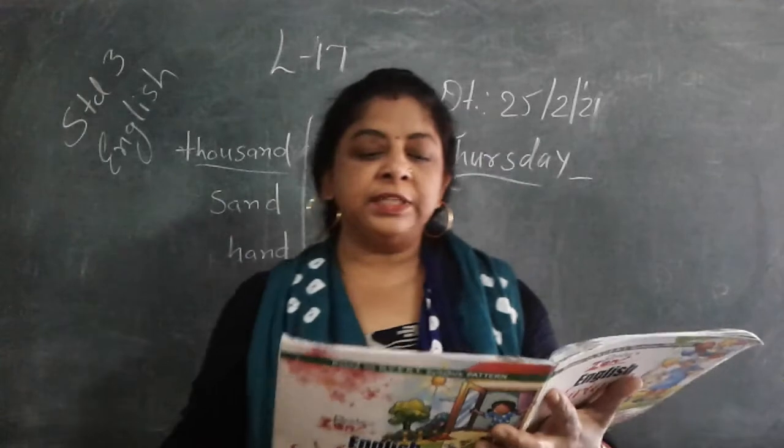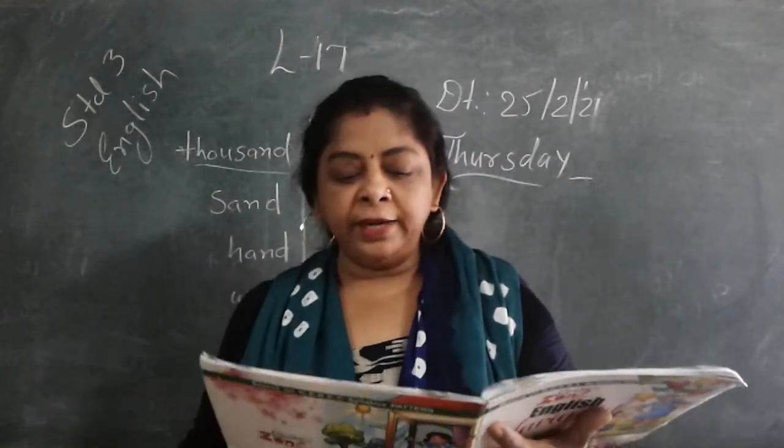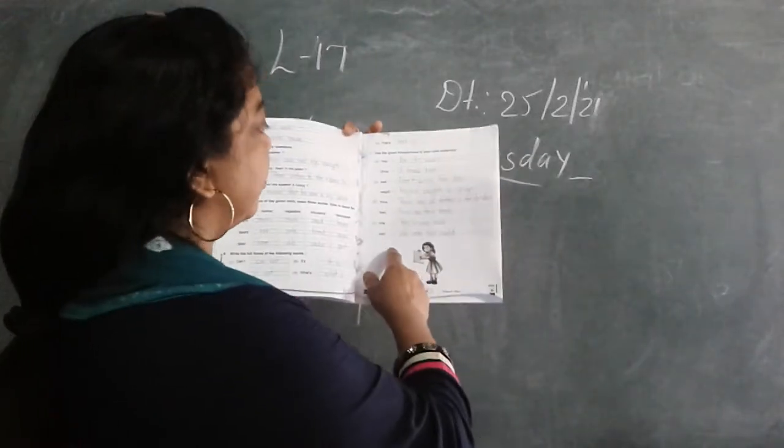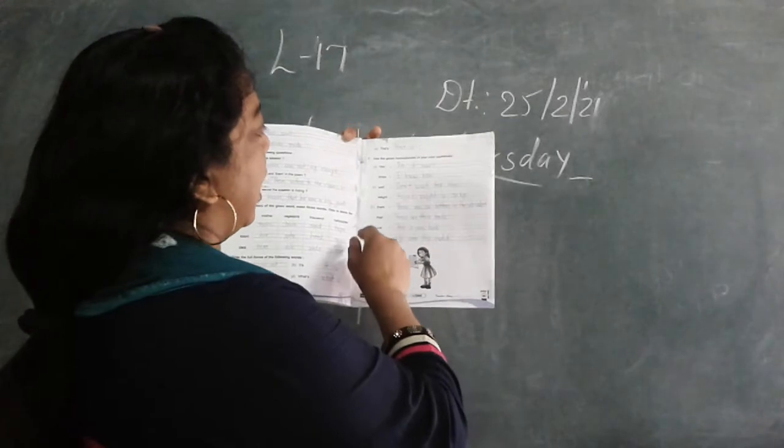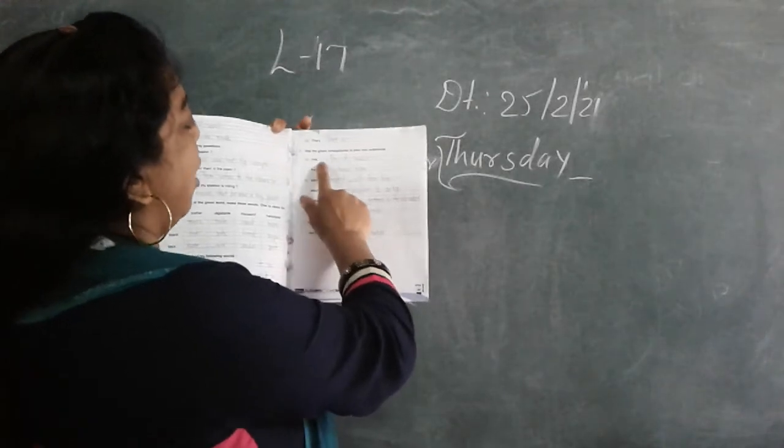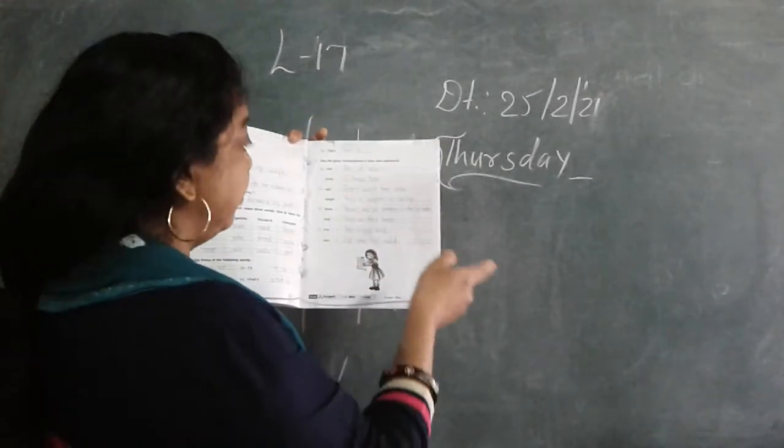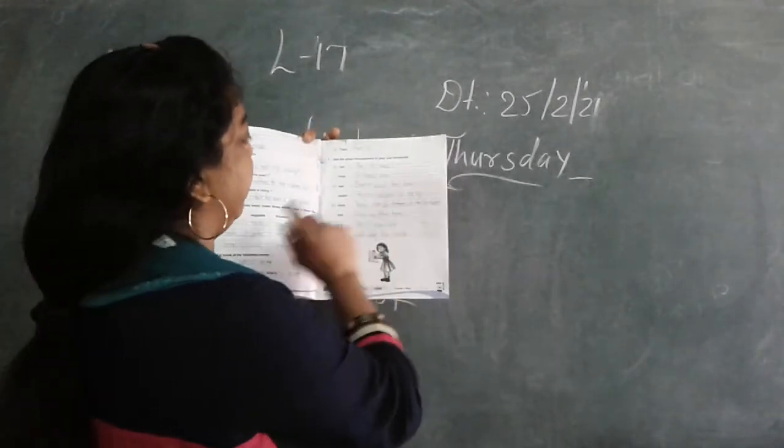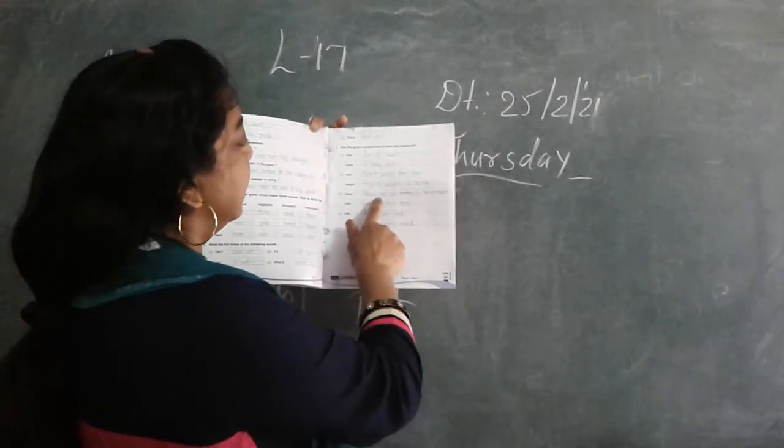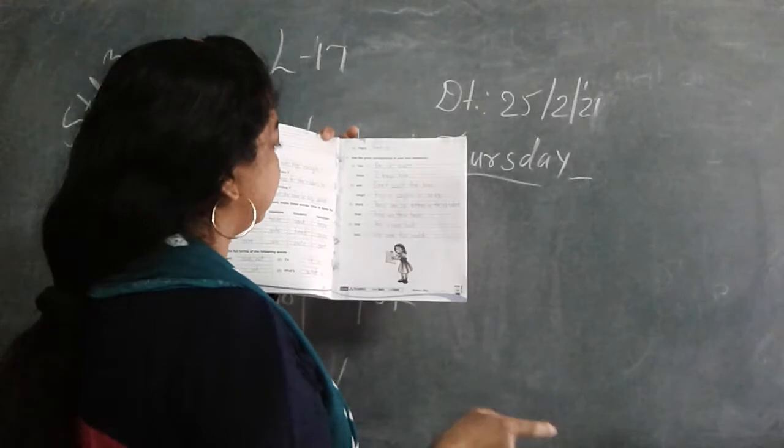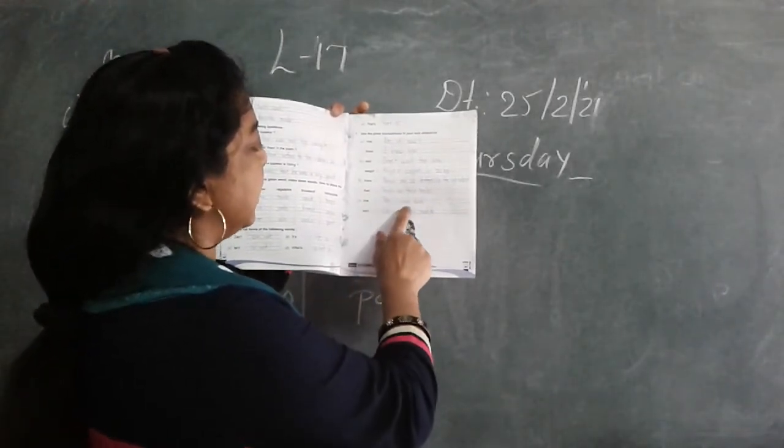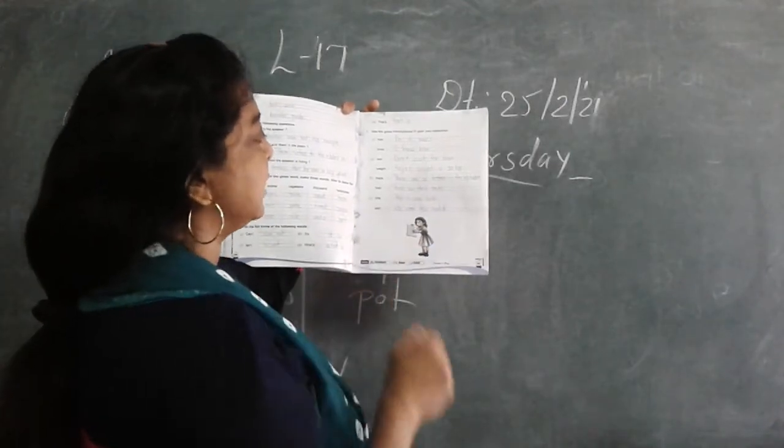Your question number seven use the given homophones in your own sentence. Here are some homophones. Now, know. Where, wear. There, their. One, won. You can see. Now, know. Here are some sentences where those homophones are used. Do it now. I know him. Wait. Don't wait for him. Weight. Raja's weight is 20 kg. There are 26 letters in the alphabet. There. These are their goals. One. This is one and won, we won this match.